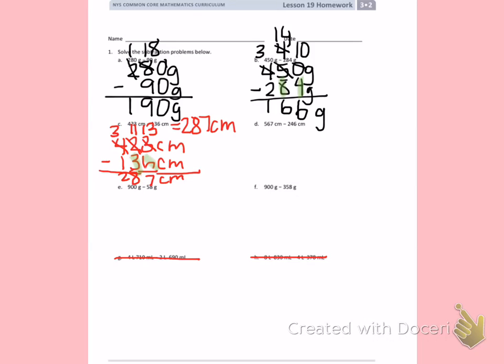Letter D. 567 centimeters minus 246 centimeters. 7 minus 6, I can subtract because the larger number 7 is on the top. 7 minus 6 is 1.